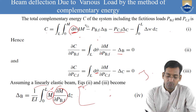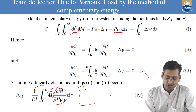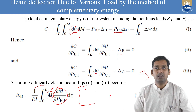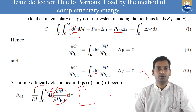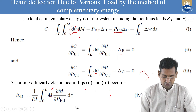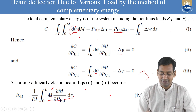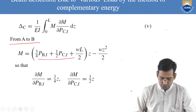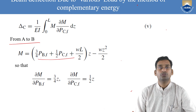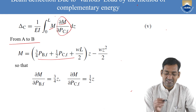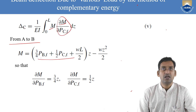First, find the moment equation from A to B. Assuming a section at distance z (0 to L/4): the reaction at A due to PBF (at L/4) is 3/4 PBF; due to PCF (at L/2) is 1/2 PCF; due to UDL (total WL at center L/2) is WL/2. The moment at z is M = (3/4 PBF + 1/2 PCF + WL/2)z − Wz²/2.